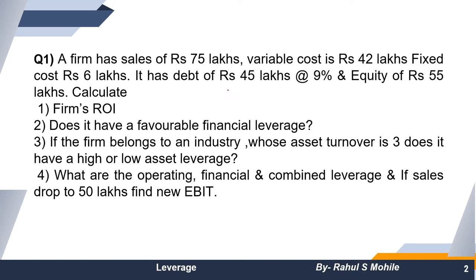Calculate the firm's ROI, that is return on investment. Point two: does it have a favorable financial leverage? Point three: if the firm belongs to an industry whose assets turnover is 3, does it have a high or low asset leverage? Point four: what are the operating, financial, and combined leverage? If the sales drop to 50 lakhs, find the new EBIT.